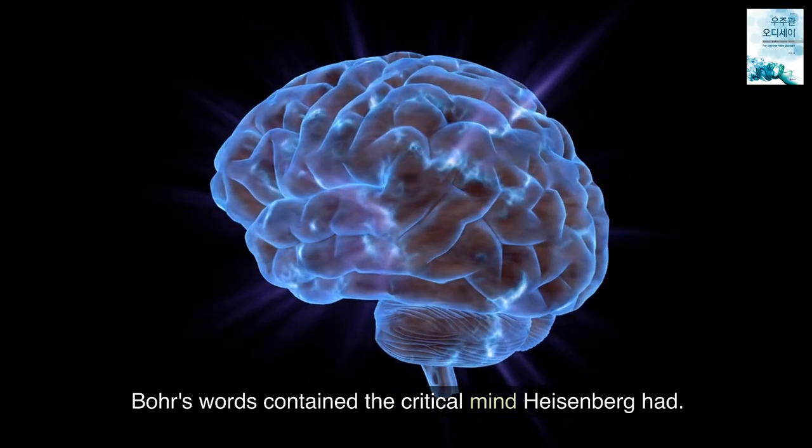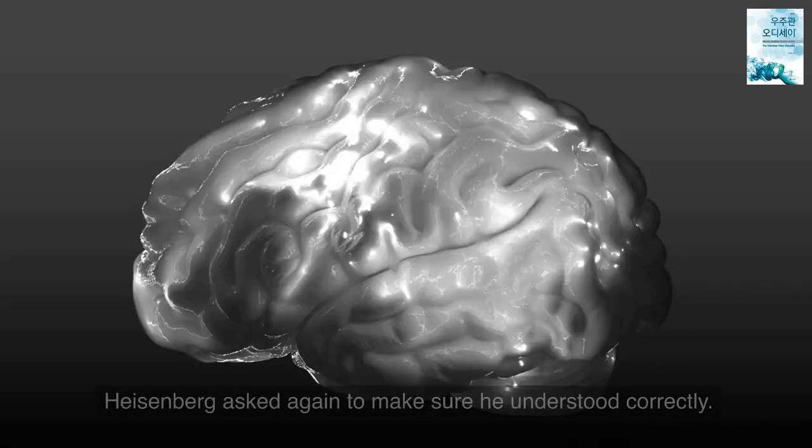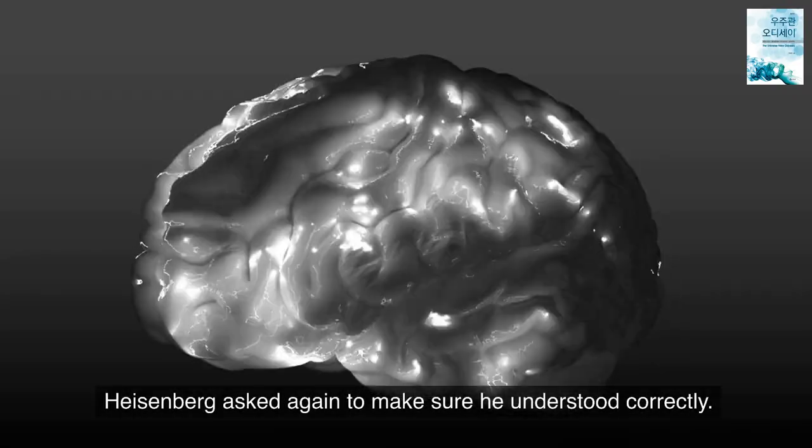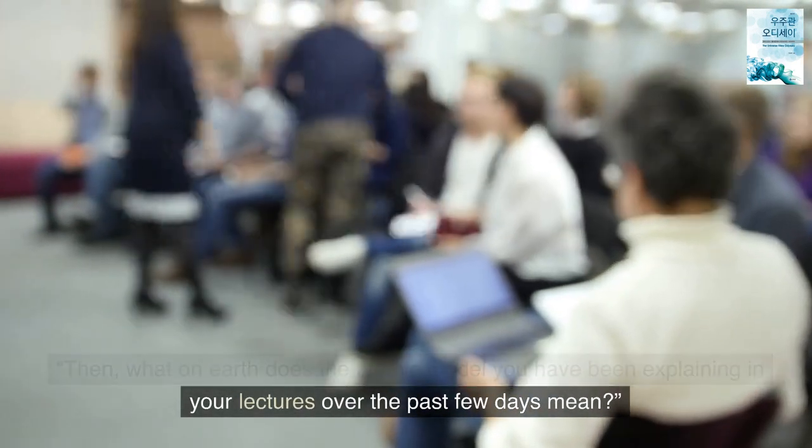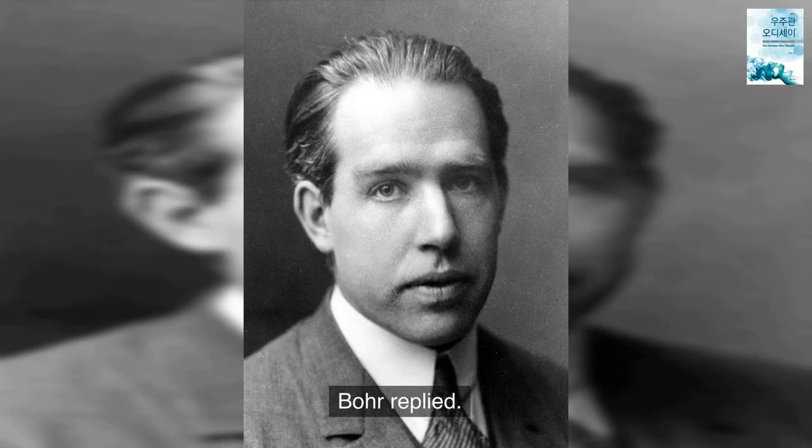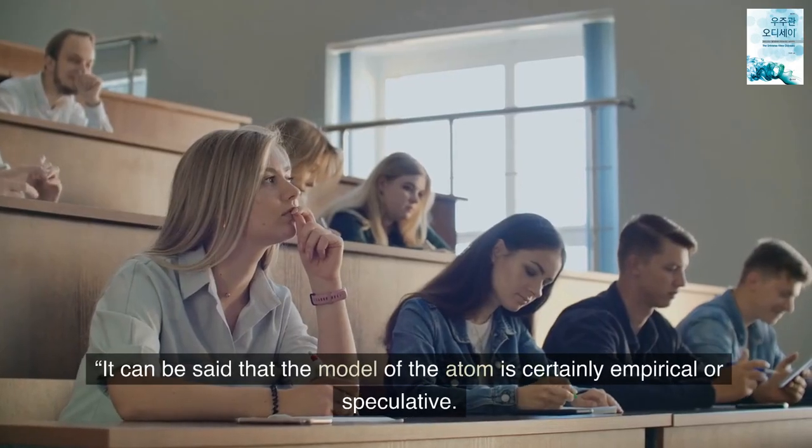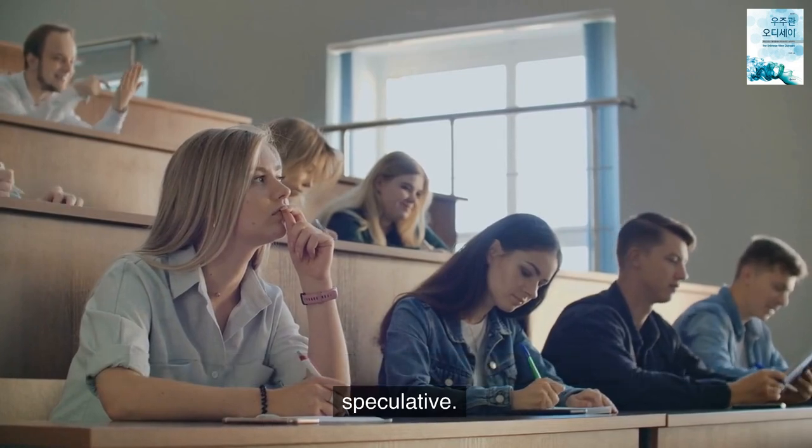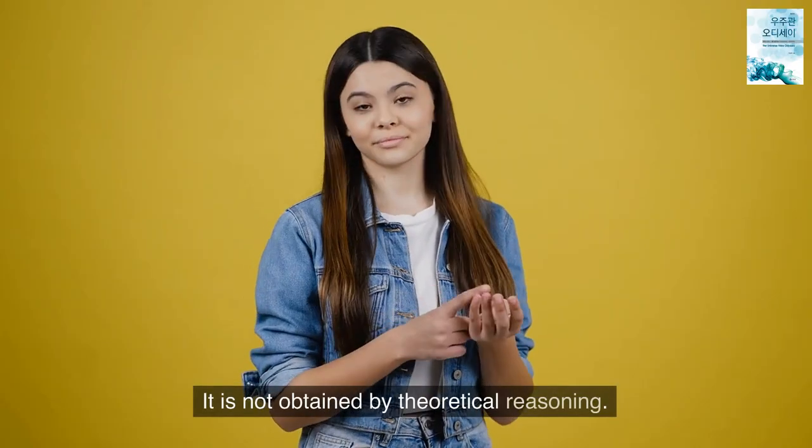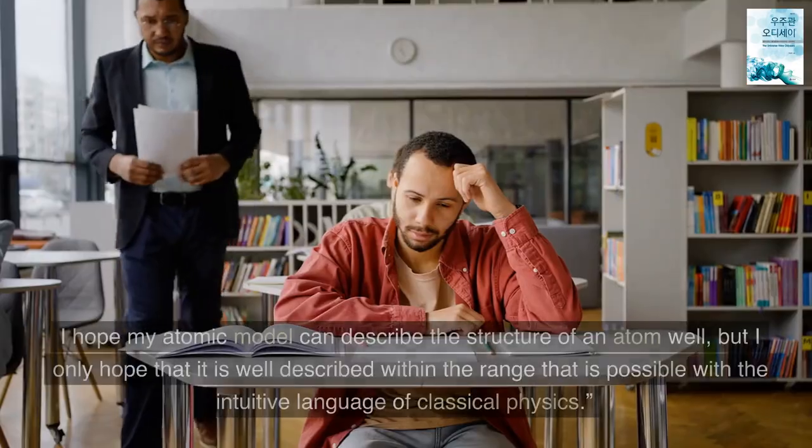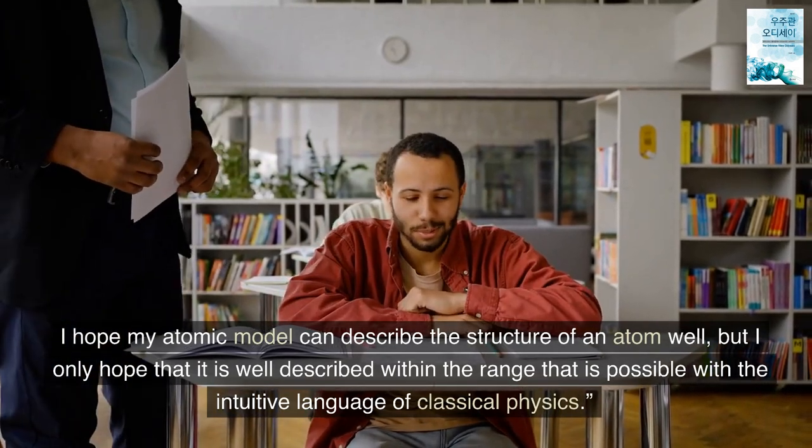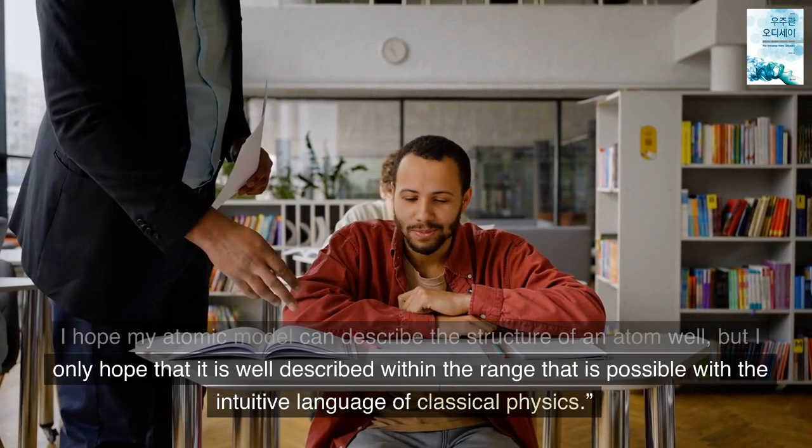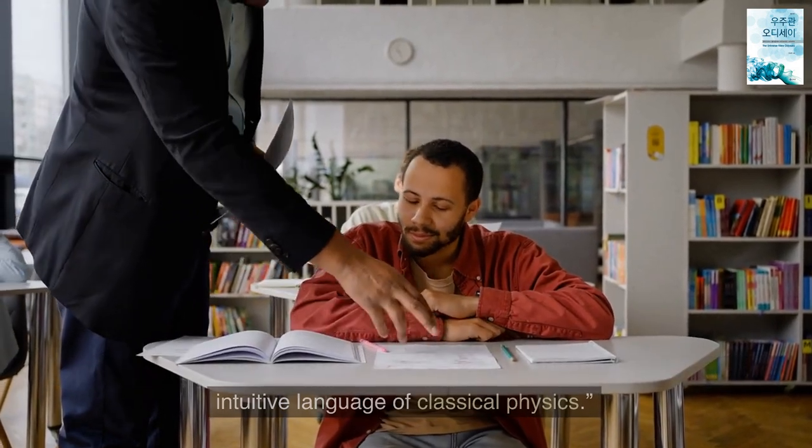Bohr's words contained the critical mind Heisenberg had. Heisenberg asked again to make sure he understood correctly. Then, what on earth does the atomic model you have been explaining in your lectures over the past few days mean? Bohr replied, it can be said that the model of the atom is certainly empirical or speculative. It is not obtained by theoretical reasoning. I hope my atomic model can describe the structure of an atom well. But I only hope that it is well described within the range that is possible with the intuitive language of classical physics.